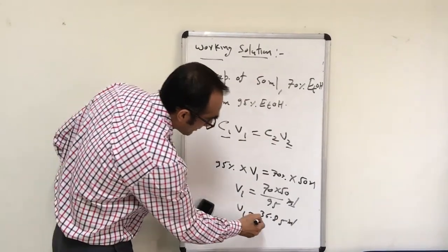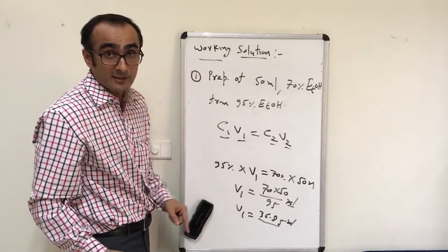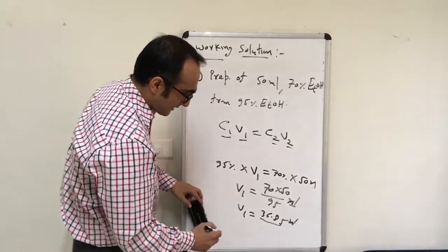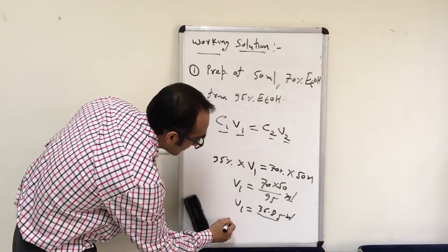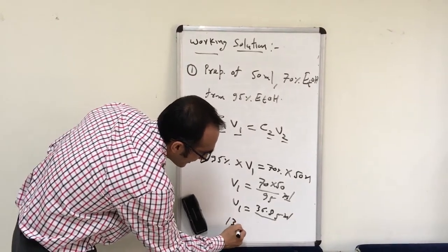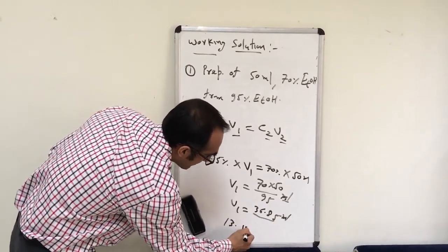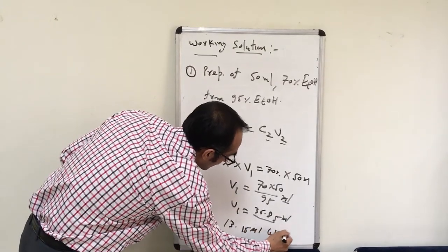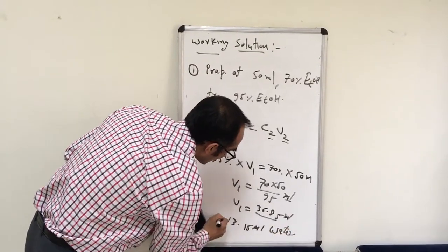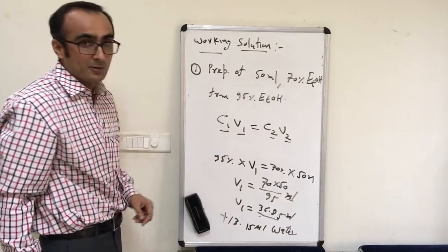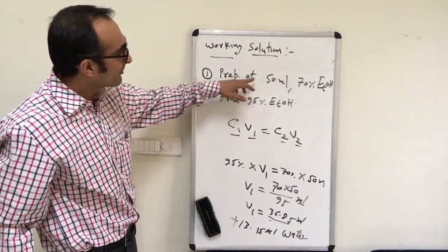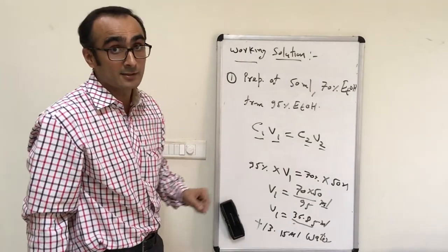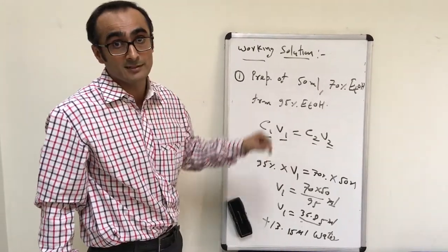So you will take 36.85 ml of 95% ethanol from the stock solution, and then add the remaining 13.15 ml of water to this volume of ethanol. That will make your total 50 ml of 70% ethanol from the stock solution of 95% ethanol.